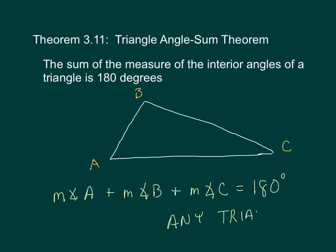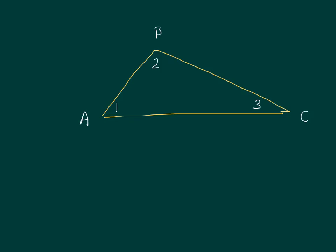Because it's a theorem, it's true all the time — for any triangle we run into. It can be obtuse, acute, or a right triangle. Any triangle we come across, the sum of the measures of the interior angles A, B, and C will always add to 180 degrees. To prove this theorem, we need to use the Parallel Postulate.